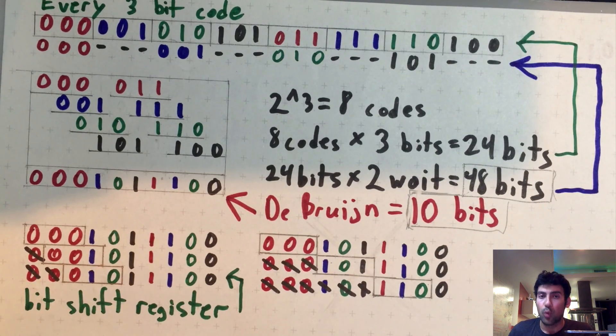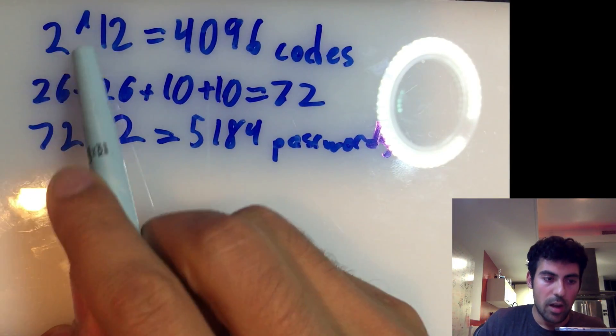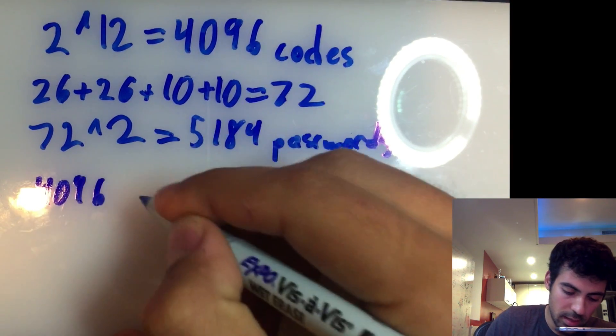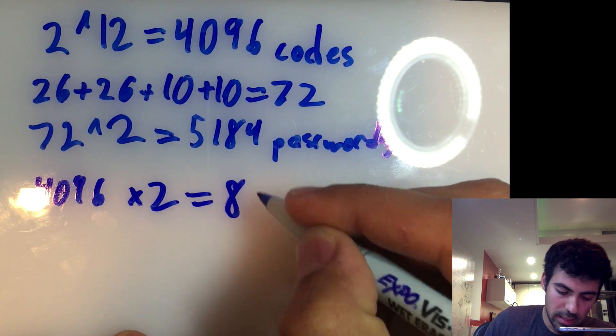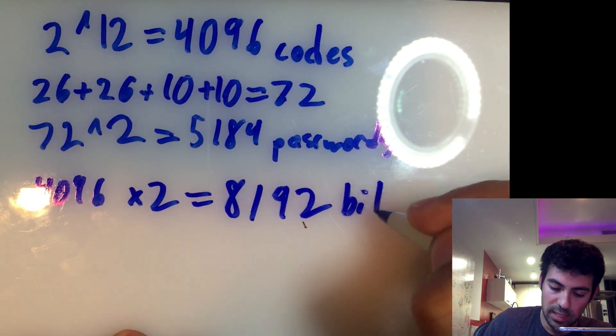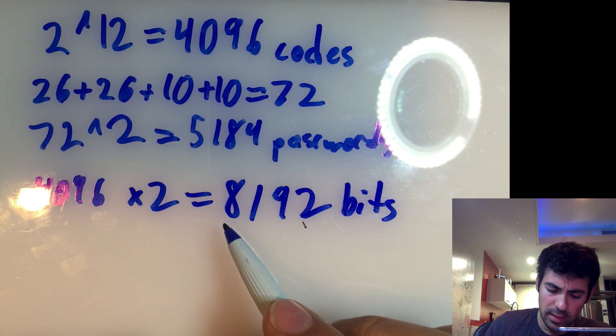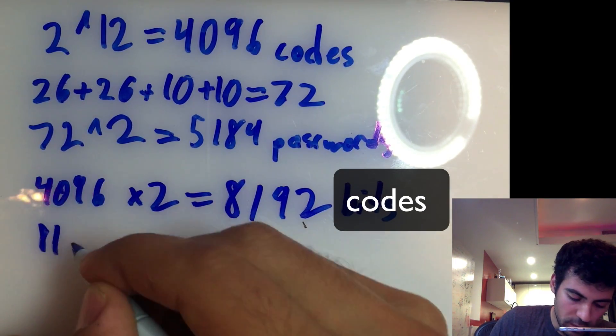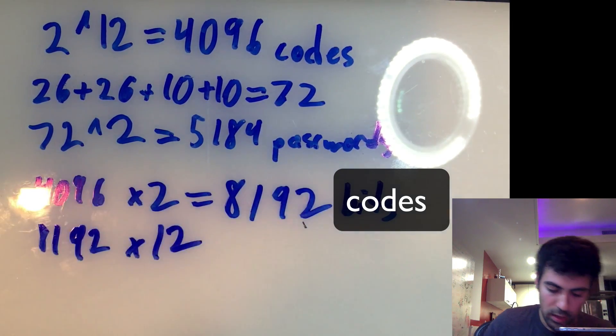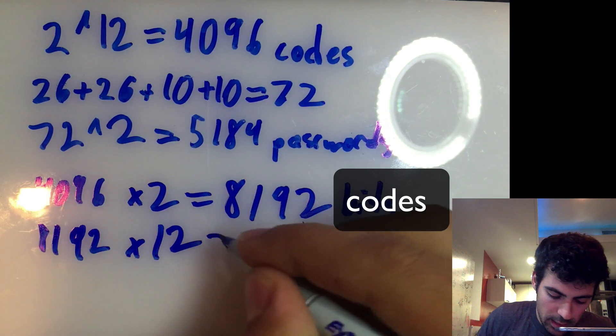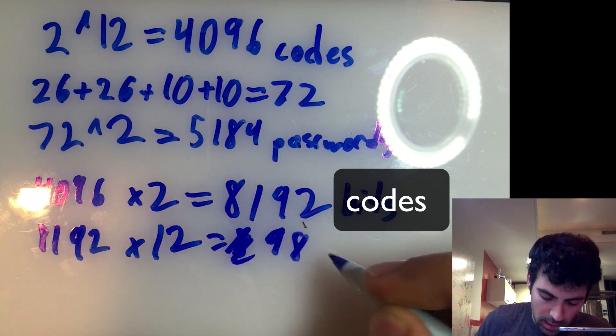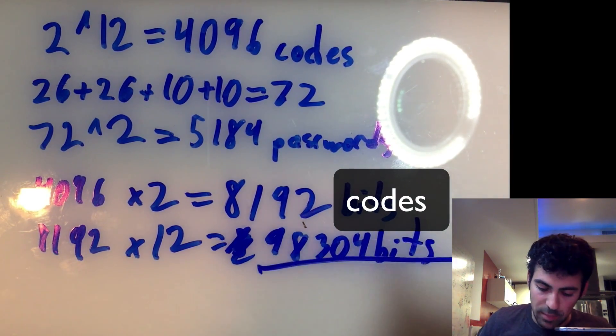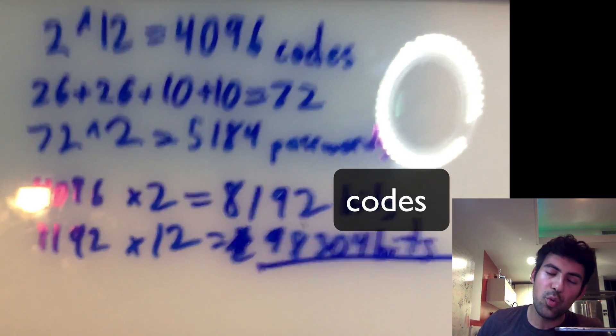Now, when you apply that to a 12-bit code like in our garage, so instead of our 2 to the 12th, which is 4,096 codes, and again, that's actually 4,096 times 2, because that's 8,192 bits, because we need to add our wait time. So instead of sending, in fact, that's 4,096 codes times 2. Each code is 12 bits long, so that's really 8,192 times 12, which is 98,304 bits. So that's how many bits we need to send to produce every 12-bit code and wait period.